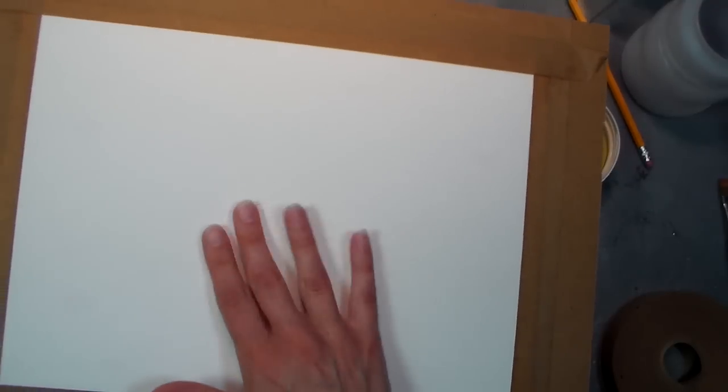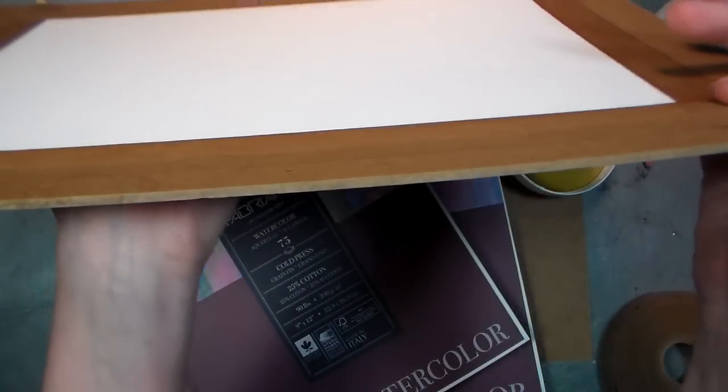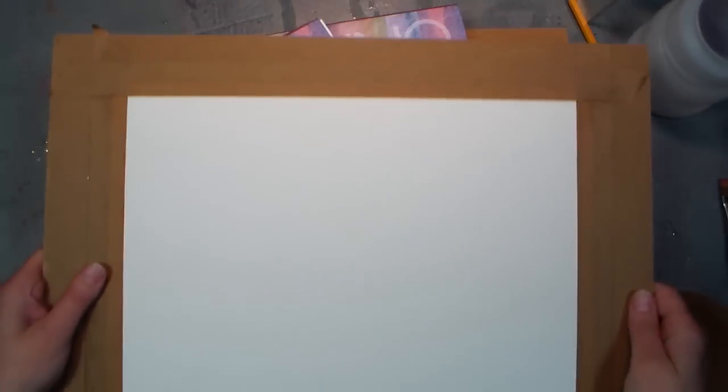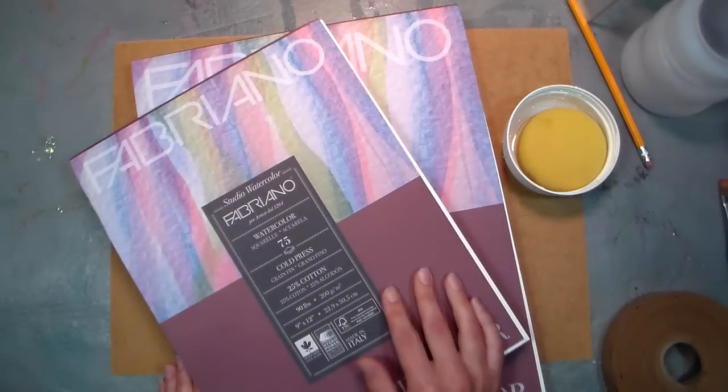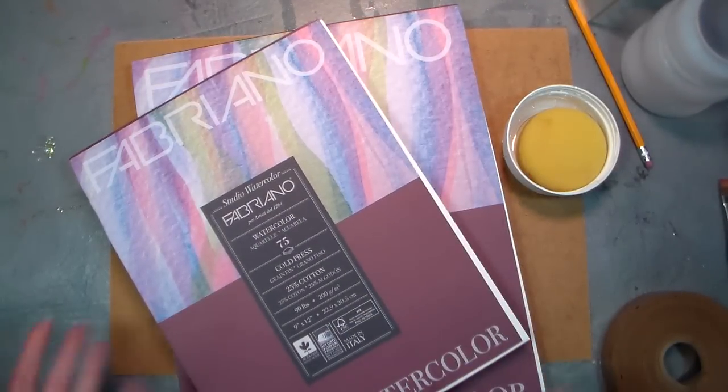Painting on a stretched piece of watercolor paper is wonderful. Listen to this - can you hear that? This paper is tight as a drum, super flat, and on a hardboard panel. It's going to be a joy to paint on because it's not going to buckle at all. The other really great benefit is that you can use less expensive paper and get better results.